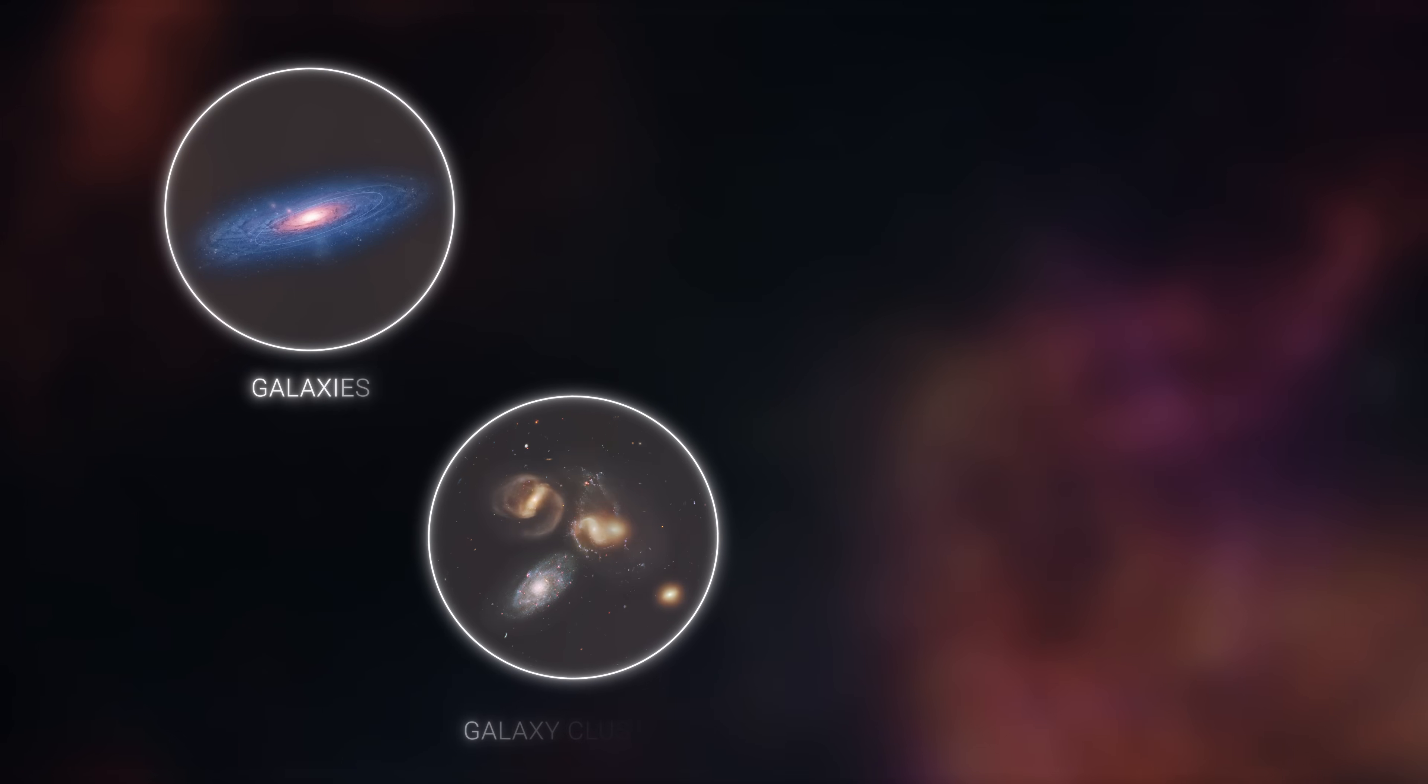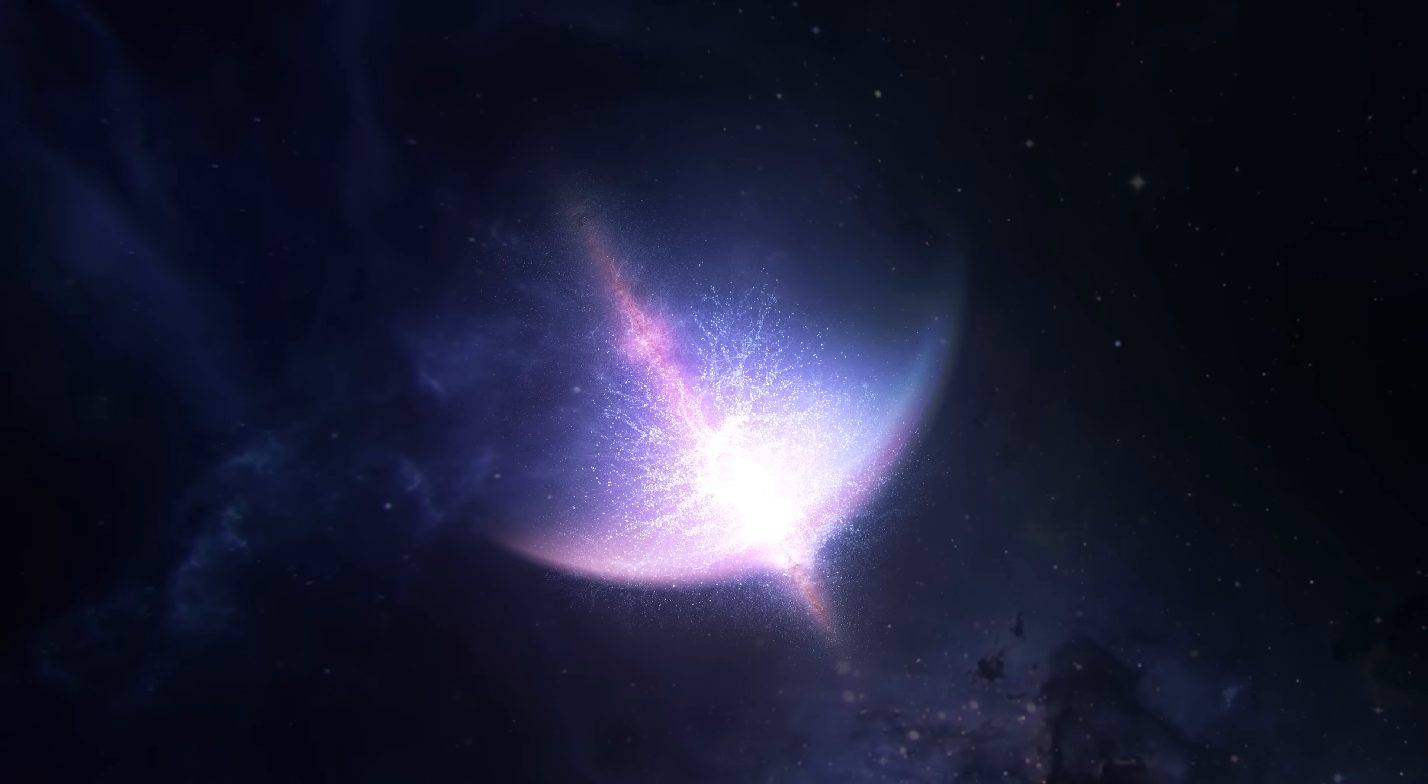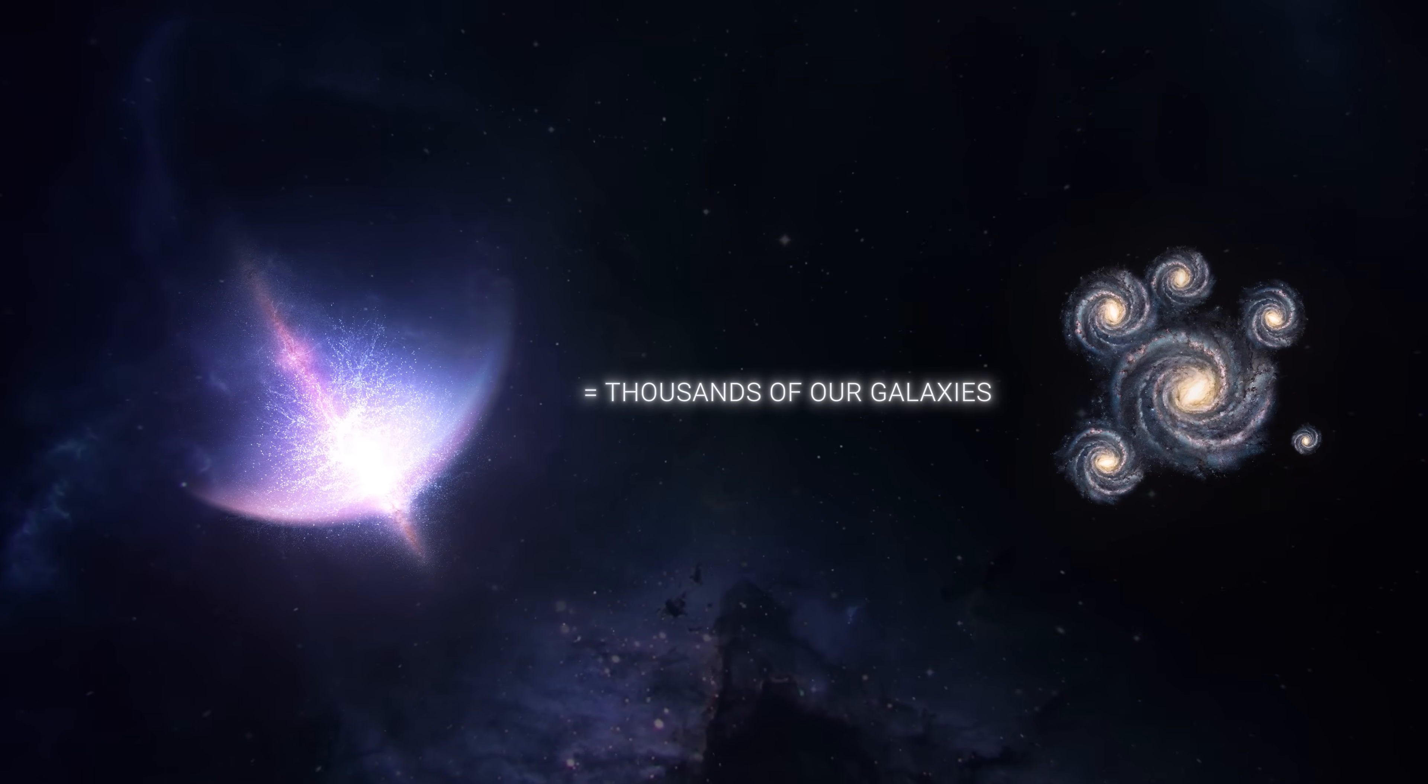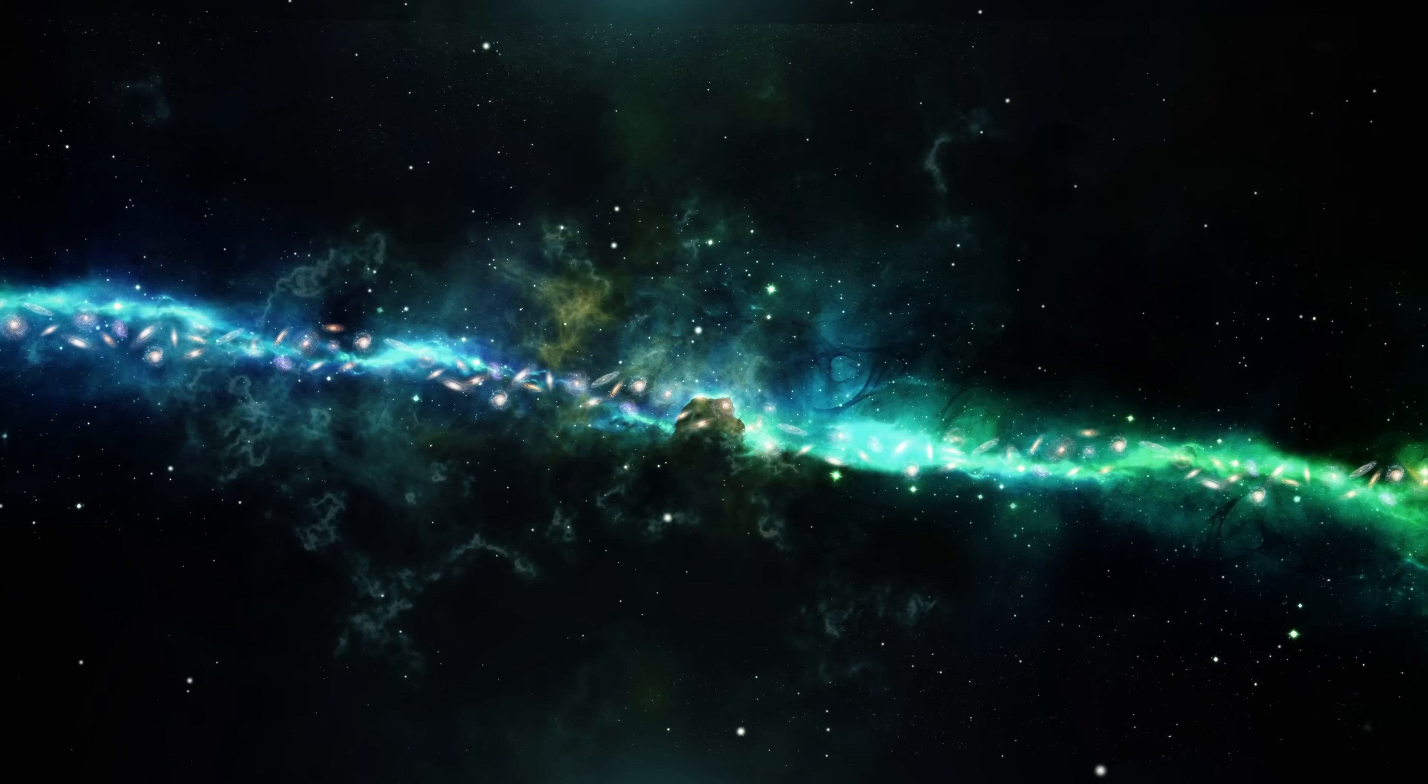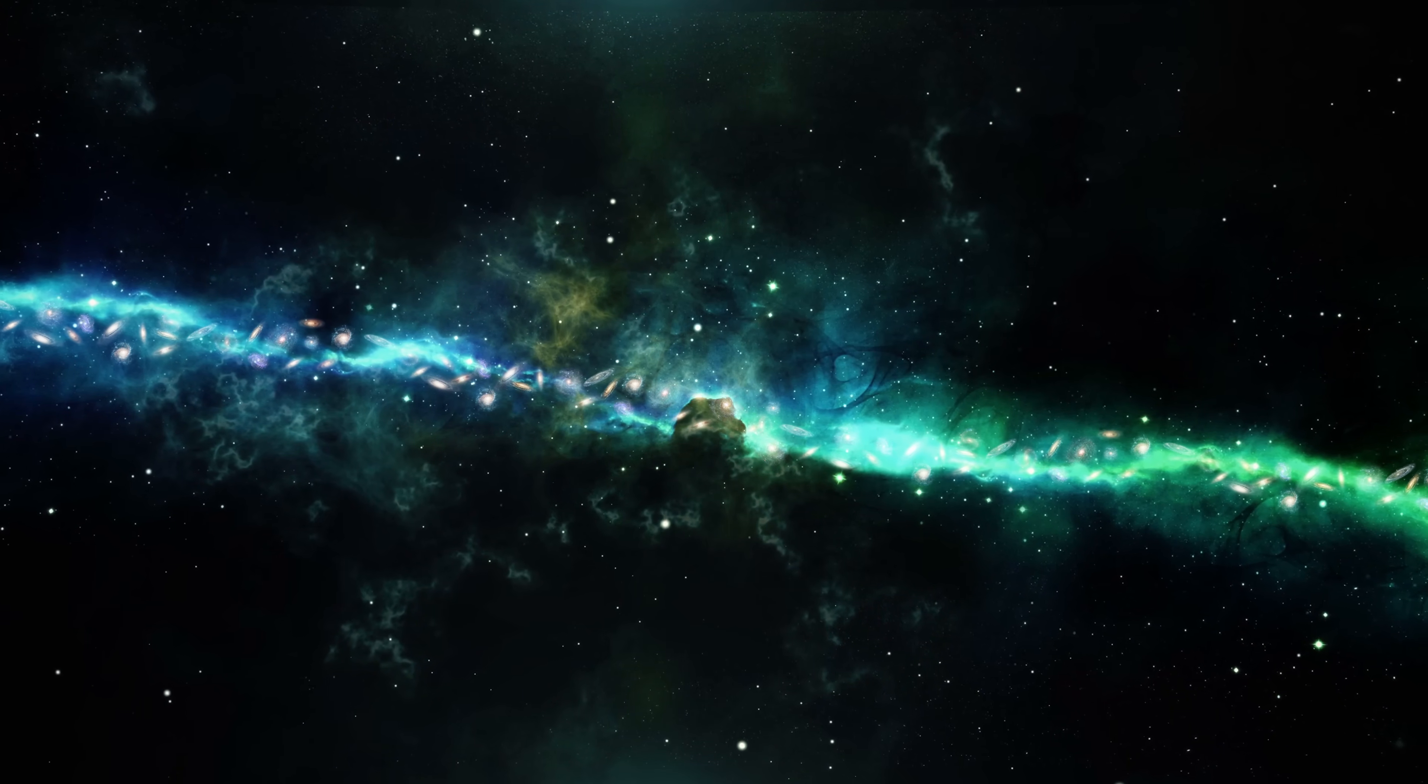The Giant Arc is made up of galaxies, galaxy clusters, gas, and dust. Imagine a structure so huge that it could encompass thousands of our galaxies, a cluster of cosmic material that stretches across the sky in an elegant curve.